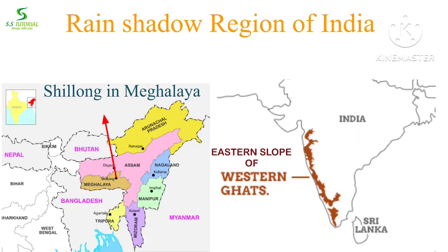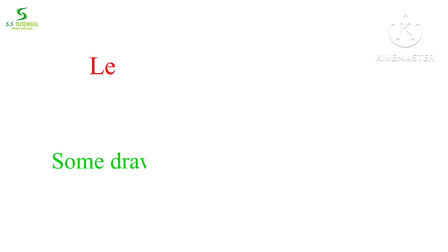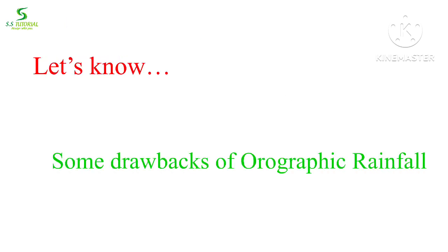Shillong in Meghalaya and the eastern slope of Western Ghats in India are situated on the leeward side of the mountain. That is why these two places receive very less rainfall compared to their windward slope, and so these two places are known as rain shadow regions.